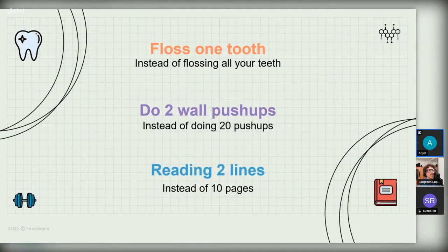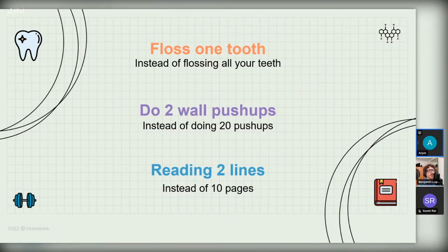Let me give a few examples to understand what the author means by tiny: floss one tooth instead of all your teeth; do two wall pushups instead of 20; read two lines of a book instead of ten pages. This is the scale we're talking about. It's a counterintuitive approach to behavior change, but the point is to make something so easy that you cannot have an excuse for not doing it.